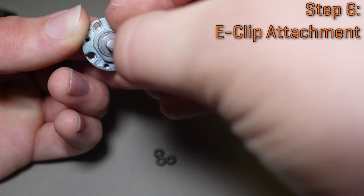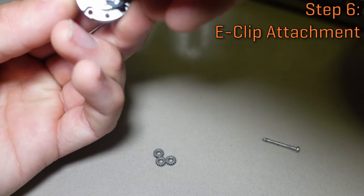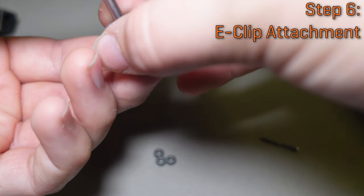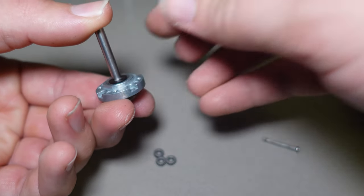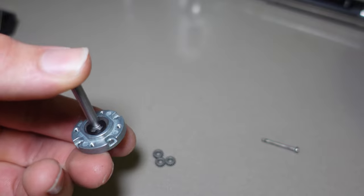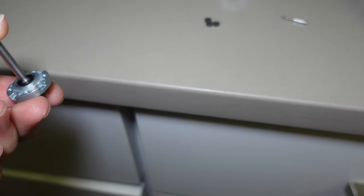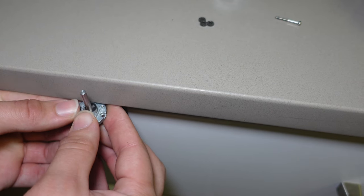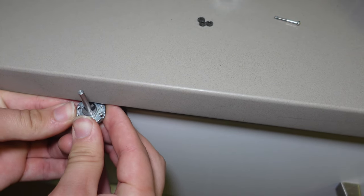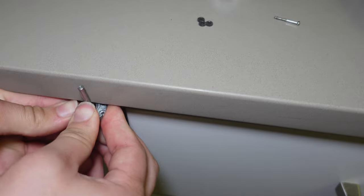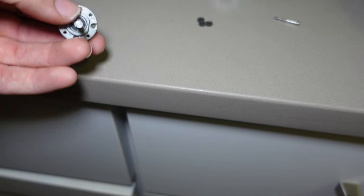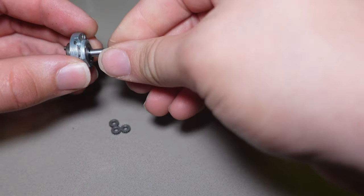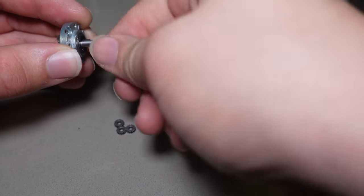Followed of course by the E-clip again. Now to get the clip on can be a little bit tricky, but you kind of just need to line it up. And I've found that the easiest way to do this might be if you have a sharp table edge. You can kind of just do this.